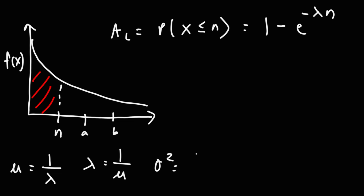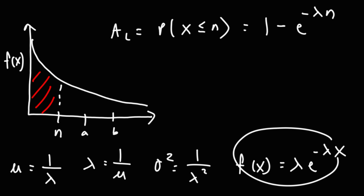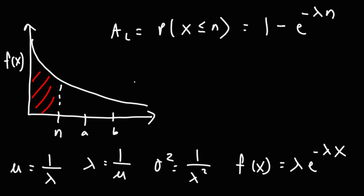If you know the mean, you can easily find lambda: the mean is 1 over lambda, or equivalently lambda is 1 over mu. The variance is 1 over lambda squared. The function f of x for this graph is equal to lambda times e to the negative lambda x. If you integrate this function from 0 to n, you get the expression for the area of the shaded region.